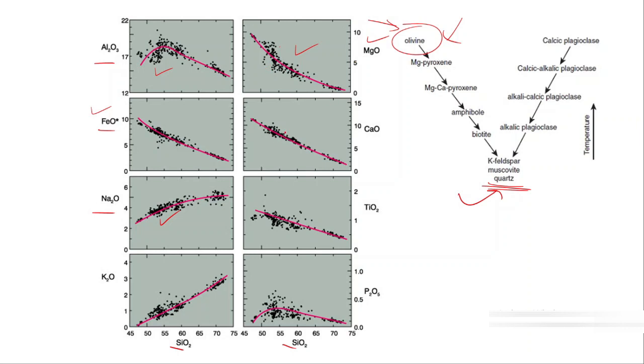Similarly, you see a trend of Na2O and K2O, which together are called alkalis. Both of these show an increasing trend.